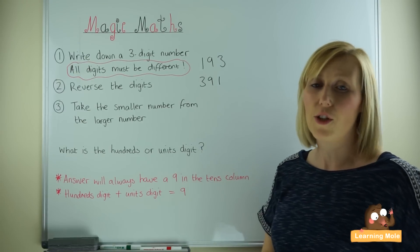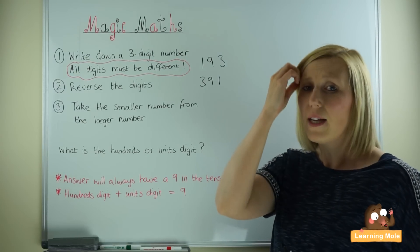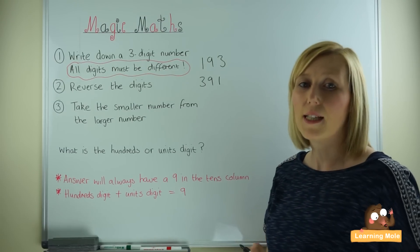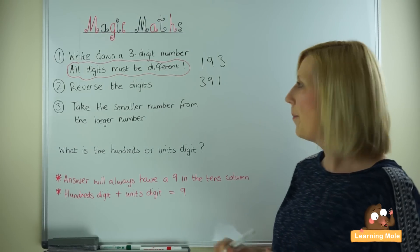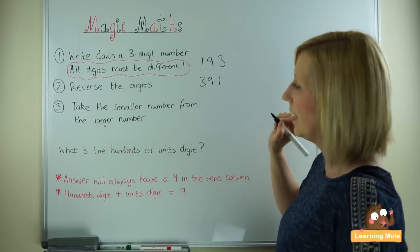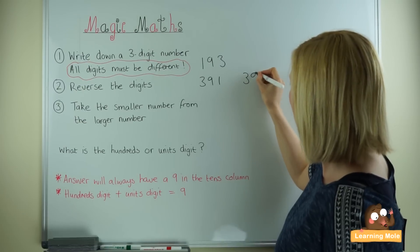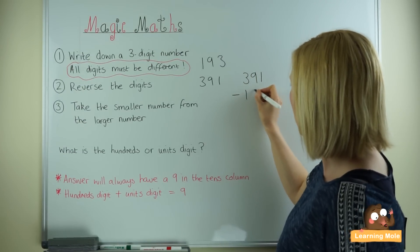And then, this is a great one for practicing subtraction, all you're going to do is ask that person to subtract the smaller number from the larger number. So we're going to set out a little column subtraction here: 391 subtract 193.